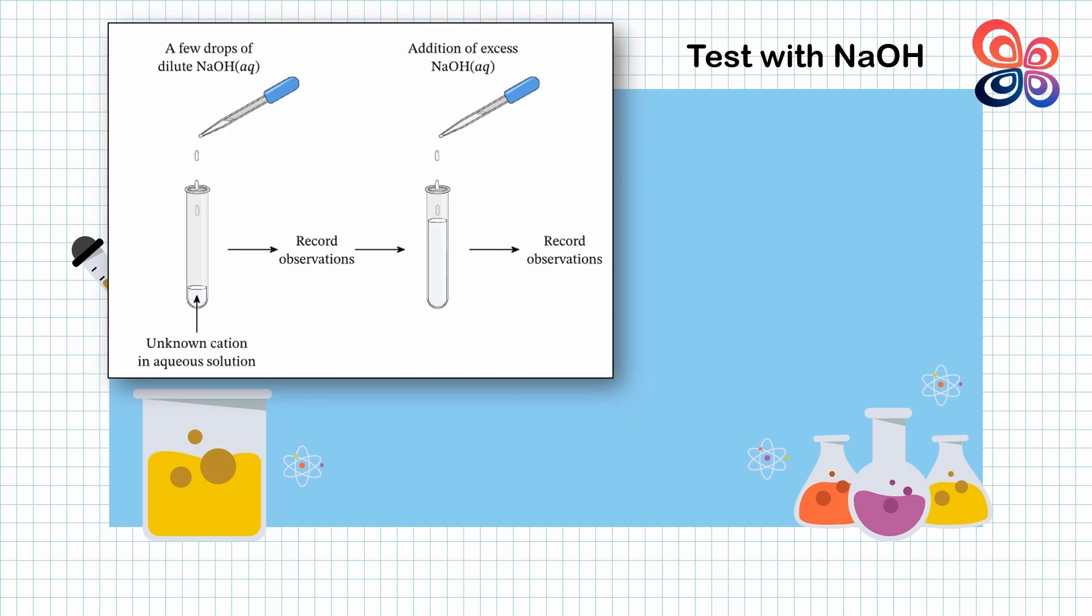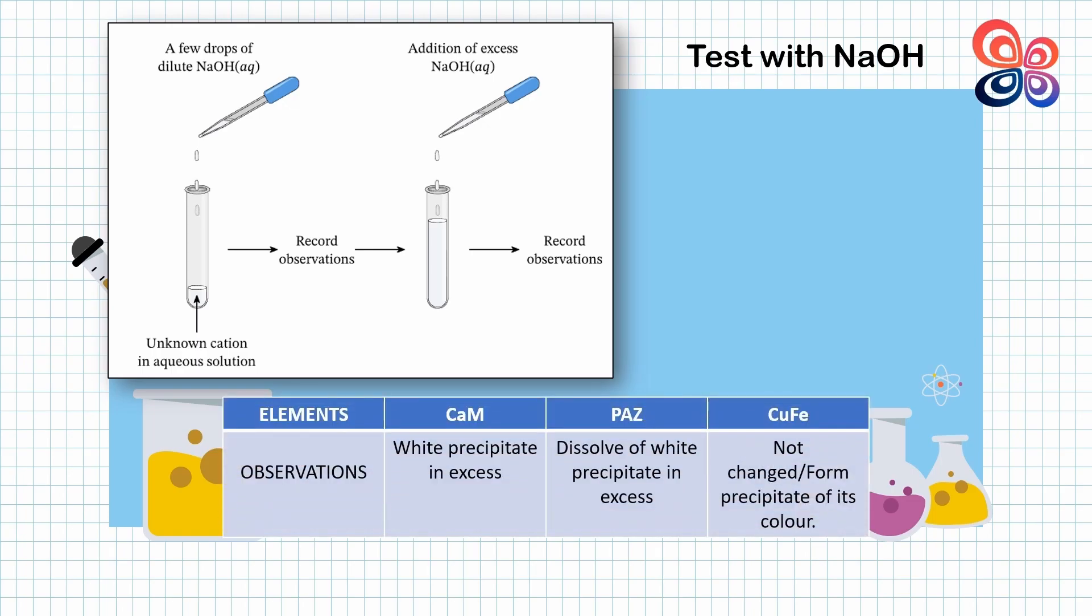Next, excess sodium hydroxide is dropped into the test tube and record the observations. We confirm that salt containing calcium or magnesium forms a white precipitate in excess.